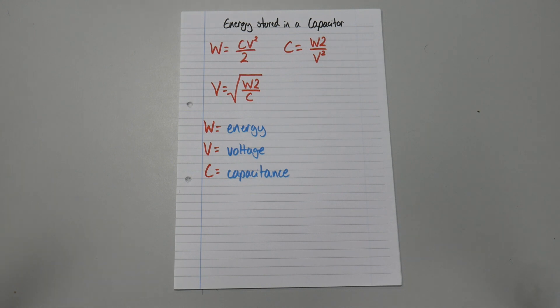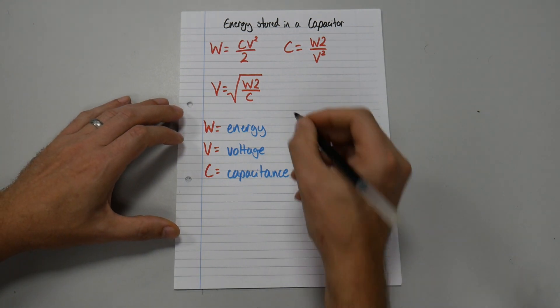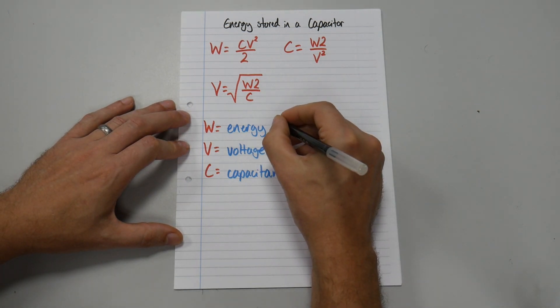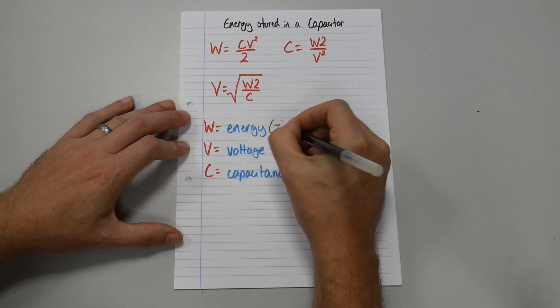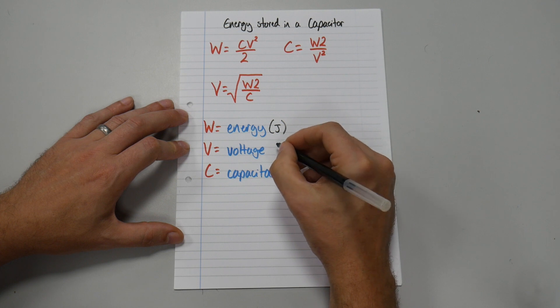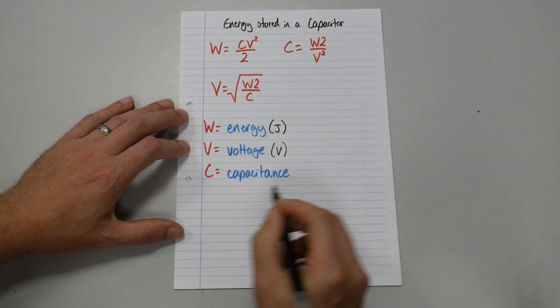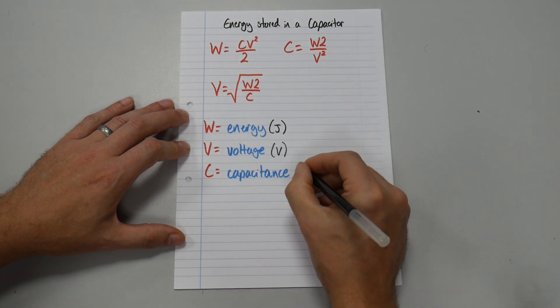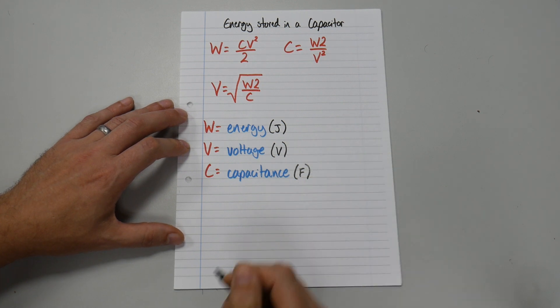And I'll change my color pen again. Let's write down the SI units for each of those. So Energy is measured in joules, a capital J. Voltage, hopefully we know that by now, is volts, capital V. And Capacitance is a capital F, which is farads.